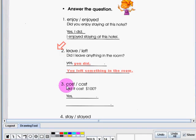Now let us read number three. The verbs are cost. And the question is, did it cost $100? What is the proper response? The correct response is yes, it did. It cost $100.